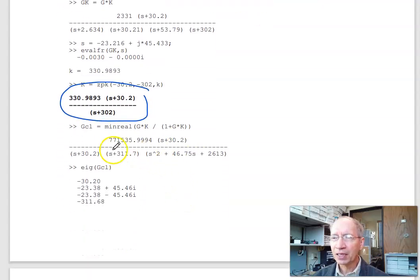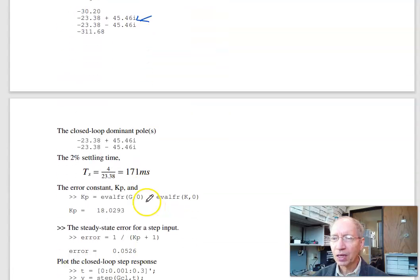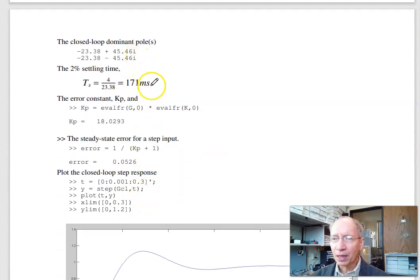And the check is form the closed loop system. Gk over 1 plus Gk. That's where the closed loop dominant pole is. Take the step response. There's my closed loop dominant pole. Settling time is 4 over the real part. kp is the DC gain, 18.